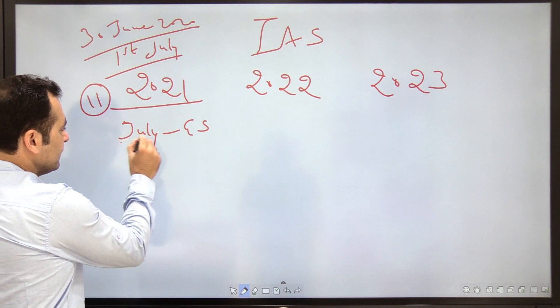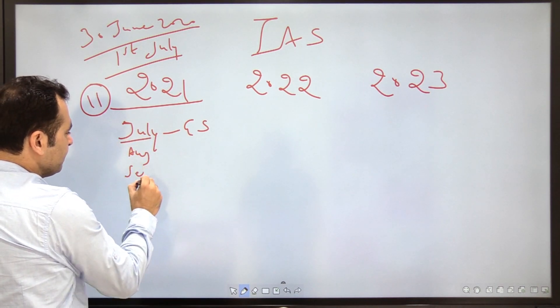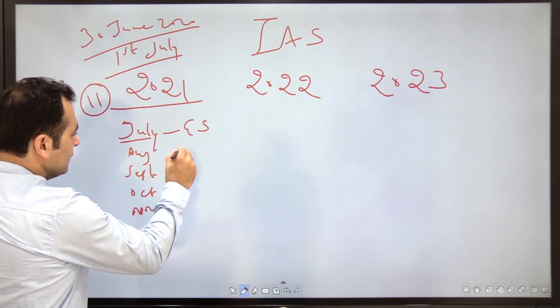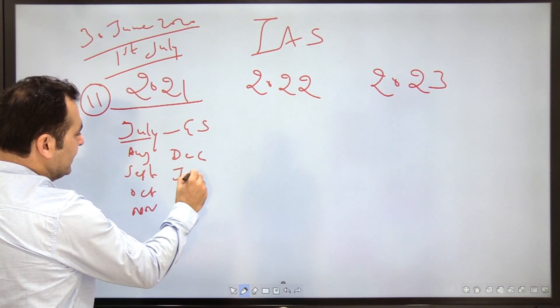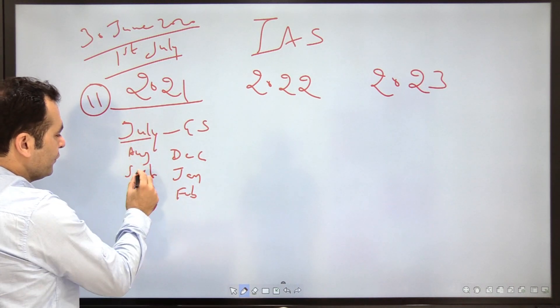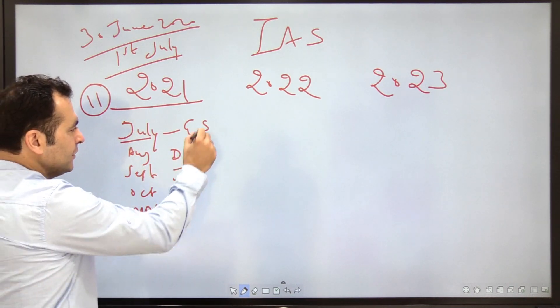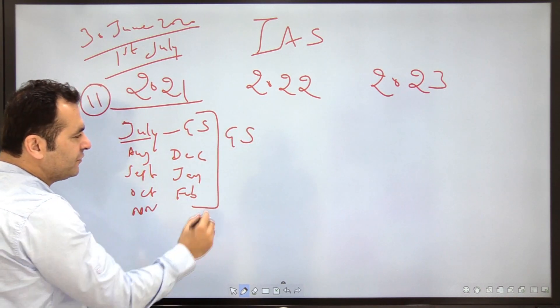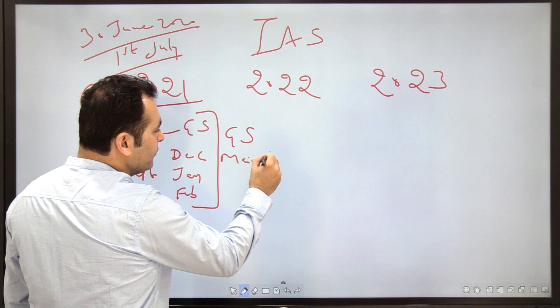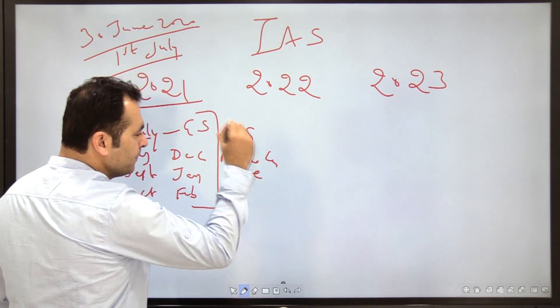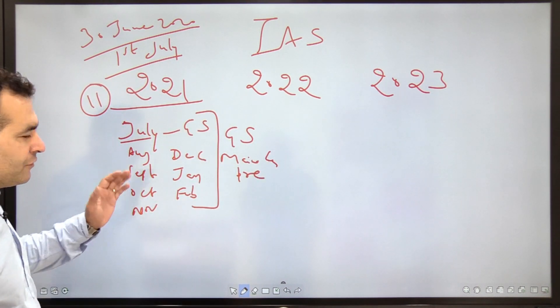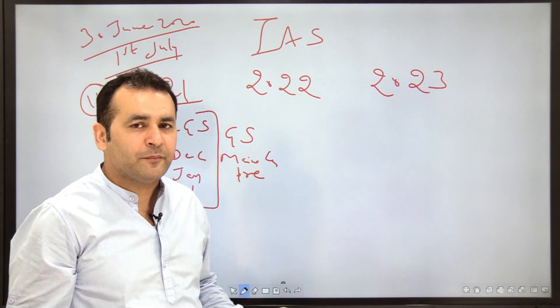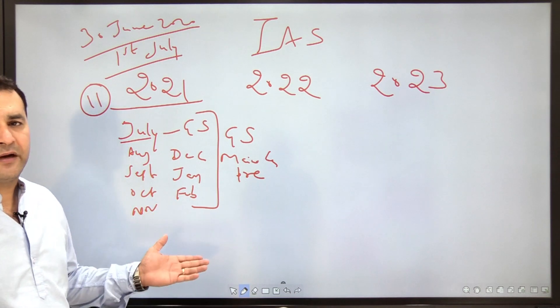July, August, September, October, November, December, January and February. In these 8 months, you have to complete your GS with mains as well as prelims as your focus. That means all the components of paper 1, 2, 3, 4 GS as well as the essay paper and your prelims syllabus.